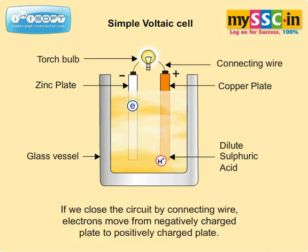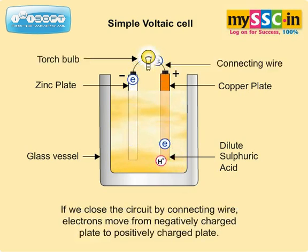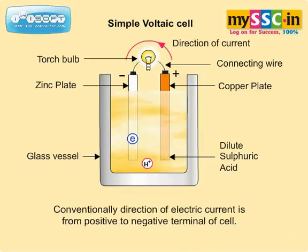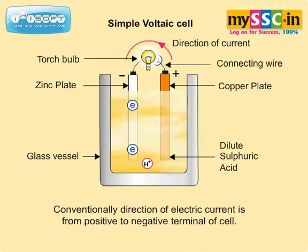If we close the circuit by connecting wire, electrons move from negatively charged plate to positively charged plate. Conventionally, the direction of electric current is from positive to negative terminal of the cell.